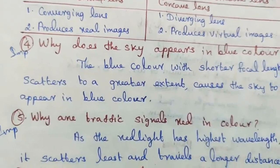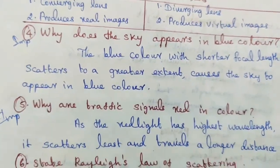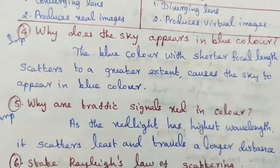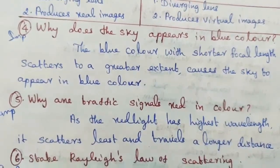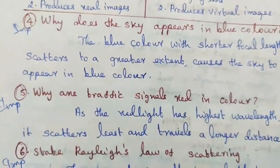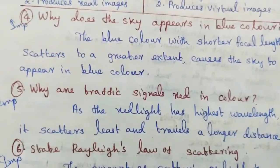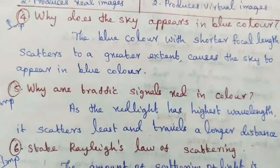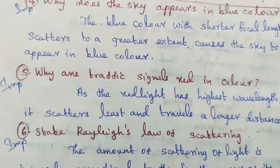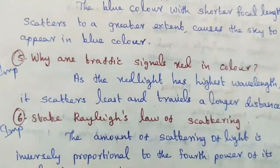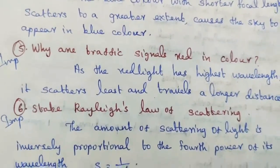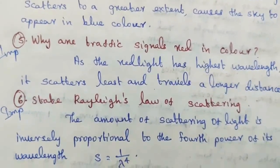Question number five, important: why are traffic signals red in color? Red light has the highest wavelength, so it scatters least and travels a longer distance. Question number six, important: state Rayleigh's law of scattering. The amount of scattering of light is inversely proportional to the fourth power of its wavelength — S = 1/λ⁴.